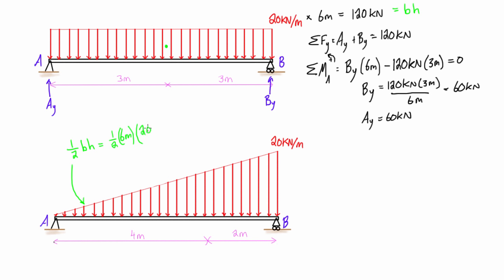That gives us one-half times 6 times 20, which is 60 kilonewtons. That is the entire force being exerted by this triangular distributed load.